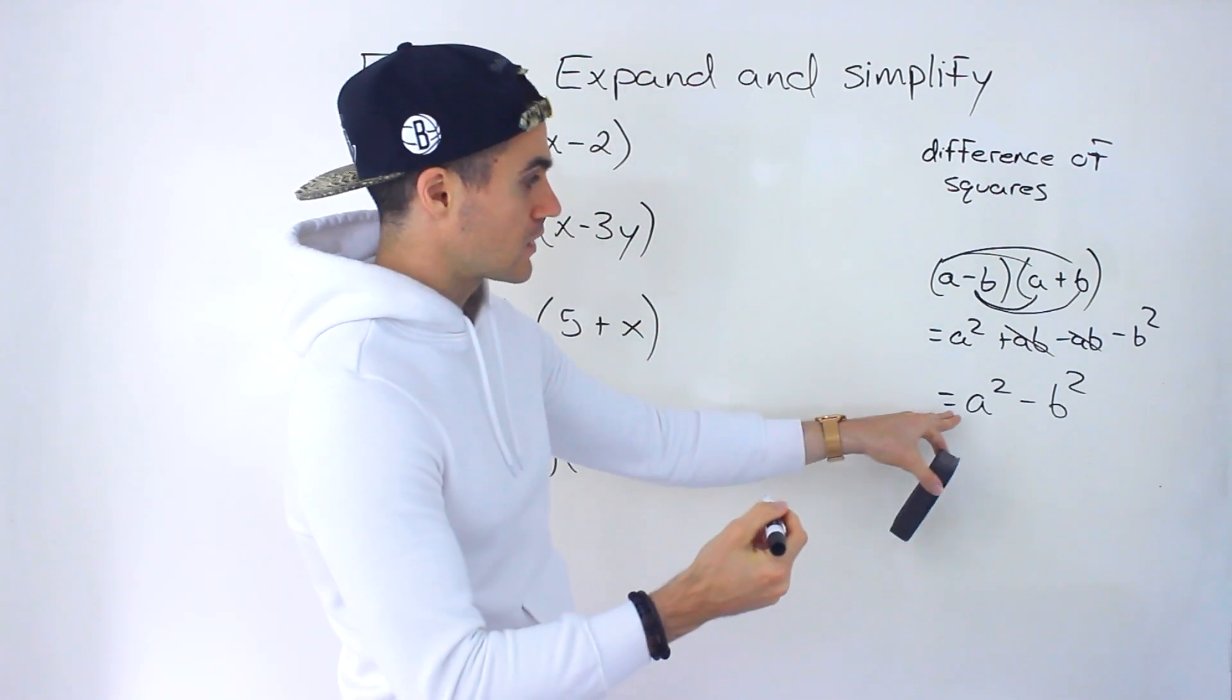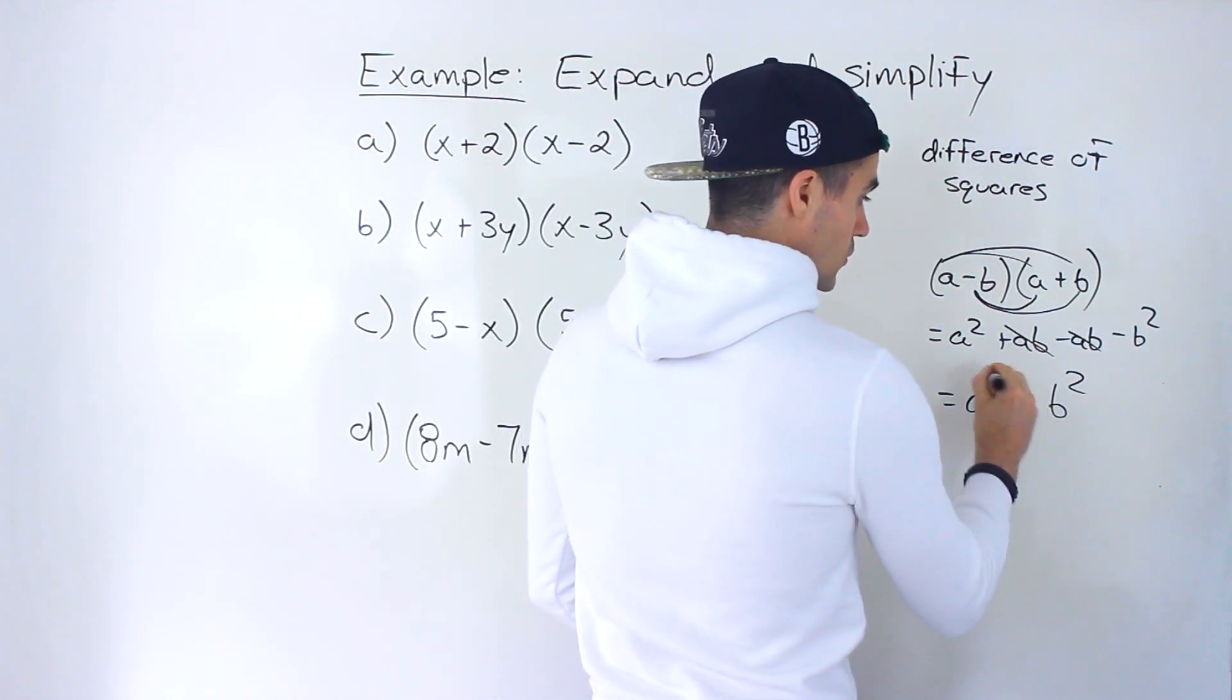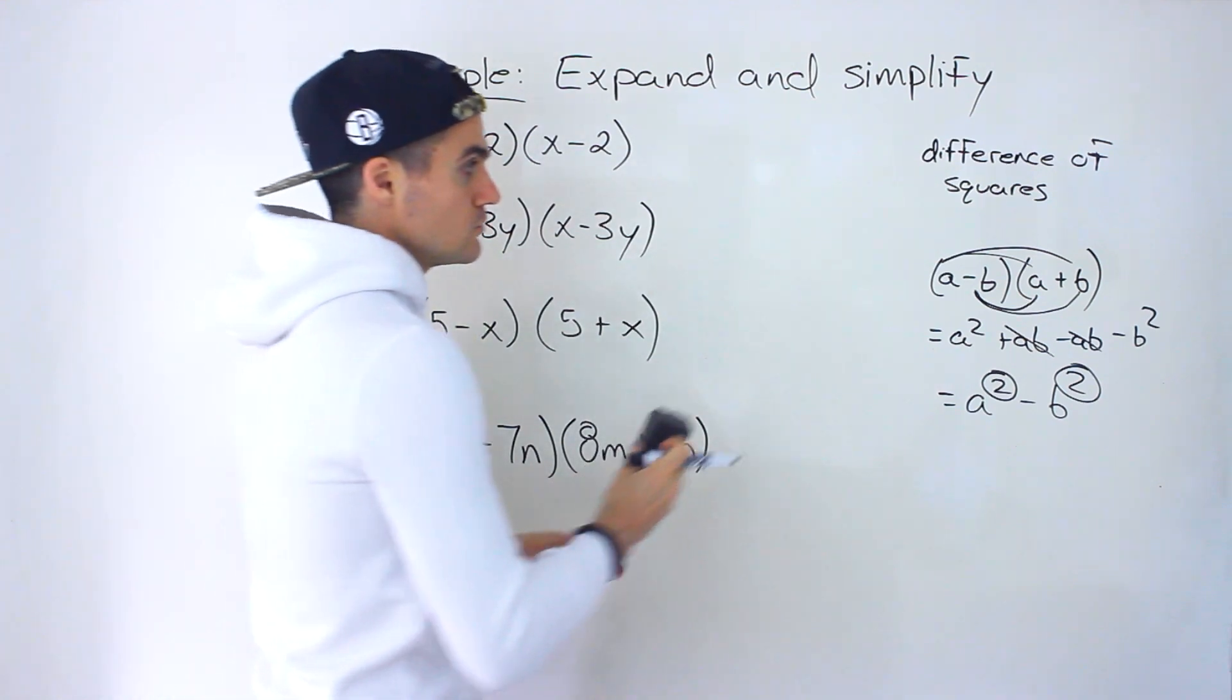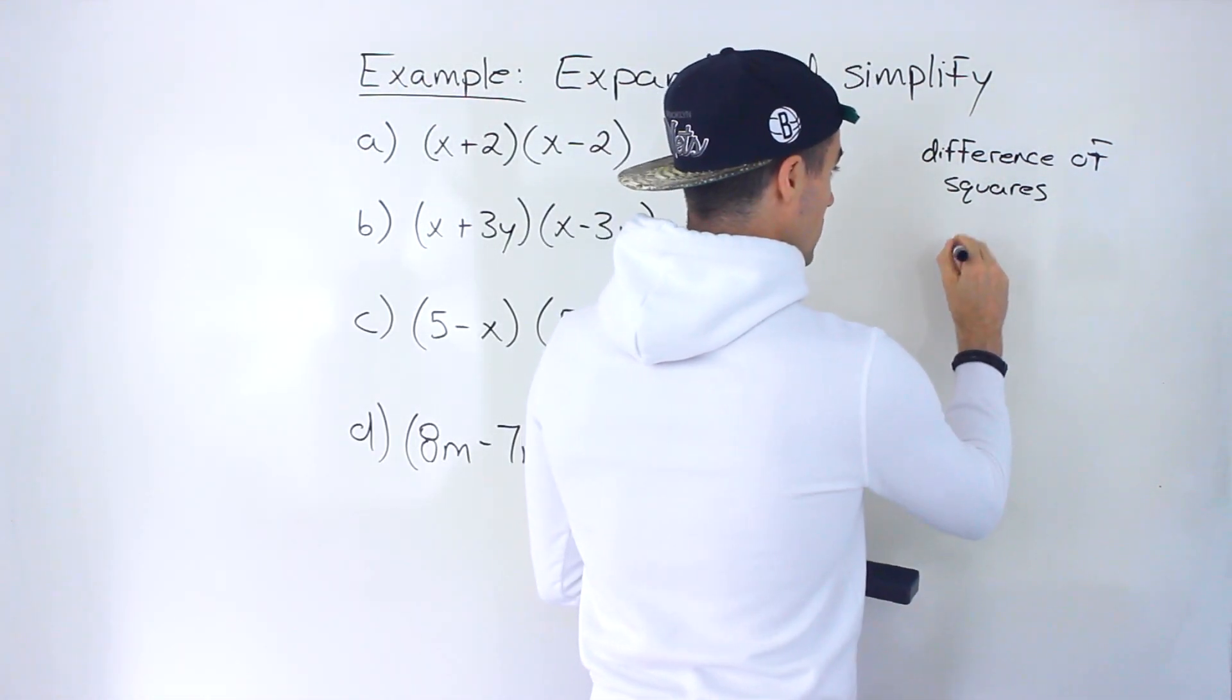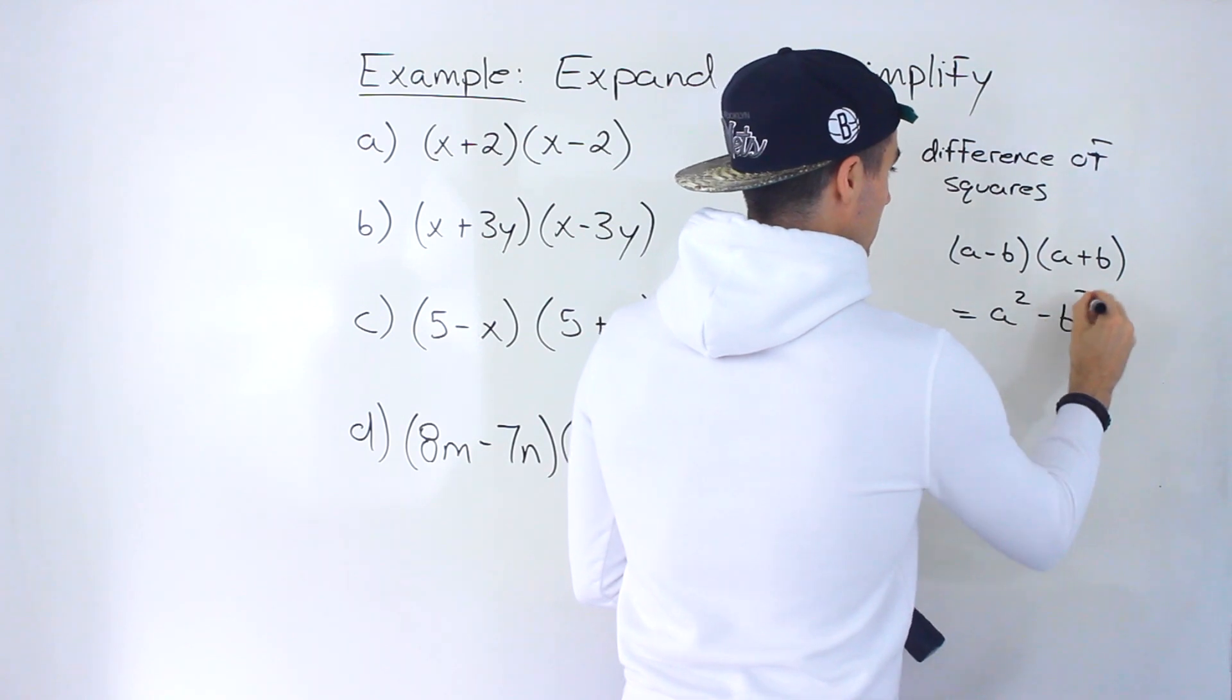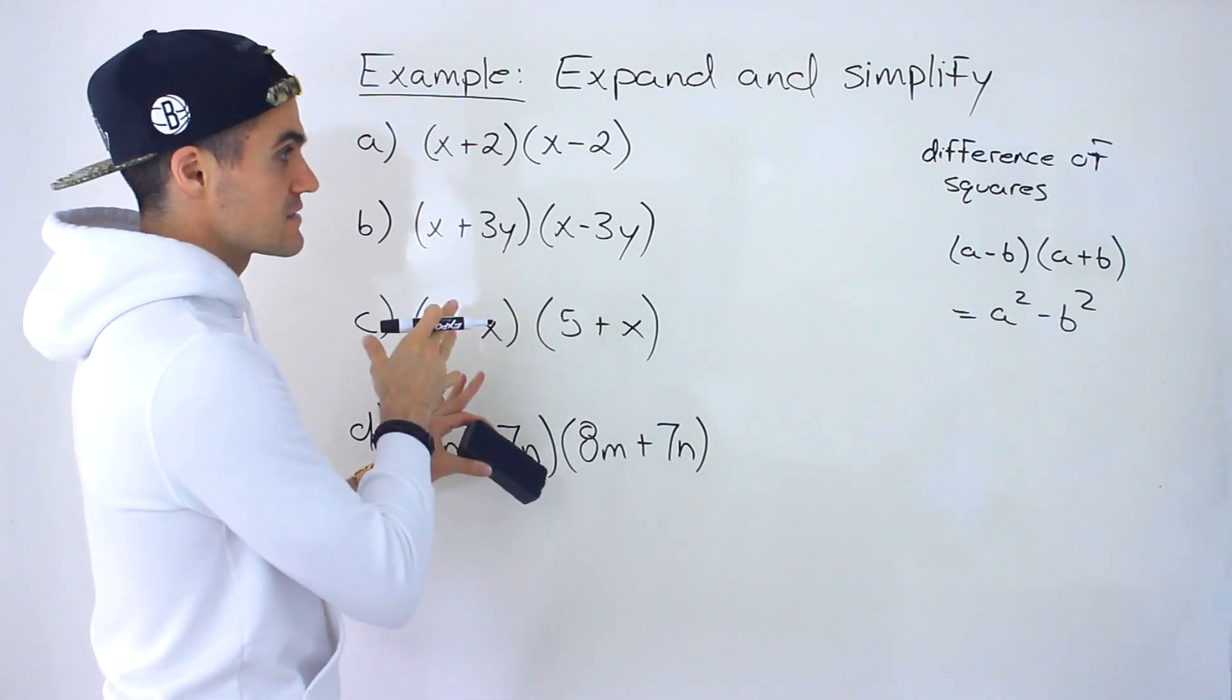And that term difference of squares comes from this result over here, right? Because you have a difference here of squares of numbers or expressions that are squared. And so you may see, let me just rewrite this without all this work, you may see a formula in your textbook given like that.